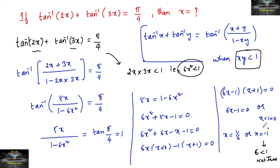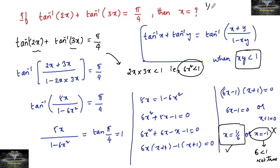So, we should not take x equals minus 1 — let us eliminate this. For x equals 1 by 6: 6 into 1 over 36 equals 1 by 6, which is less than 1, so it is satisfying. Therefore x is equal to 1 by 6. Please don't take x equal to negative 1, as it is not satisfying the condition.